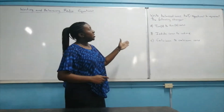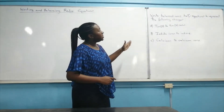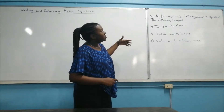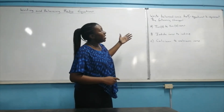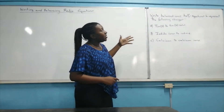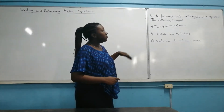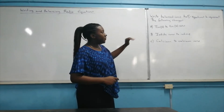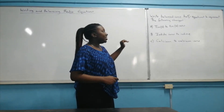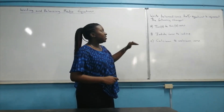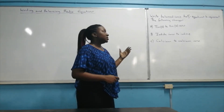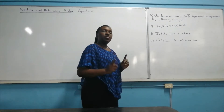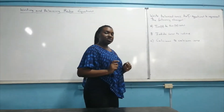If you look at this question, we're being asked to write balanced half equations to represent the following changes: tin 2 to tin 4 ions, iodide ions to iodine, and calcium to calcium ions. Let us go ahead and start our process.